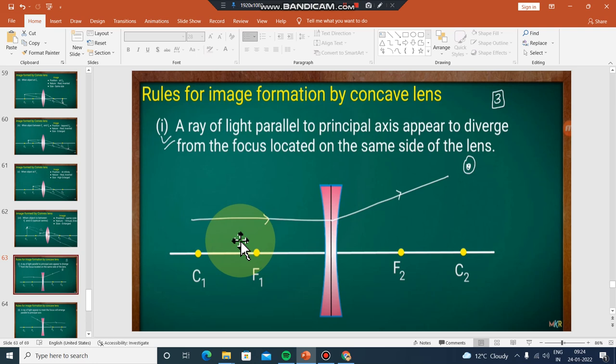The rule is: parallel rays diverge from the focus after passing through the lens.